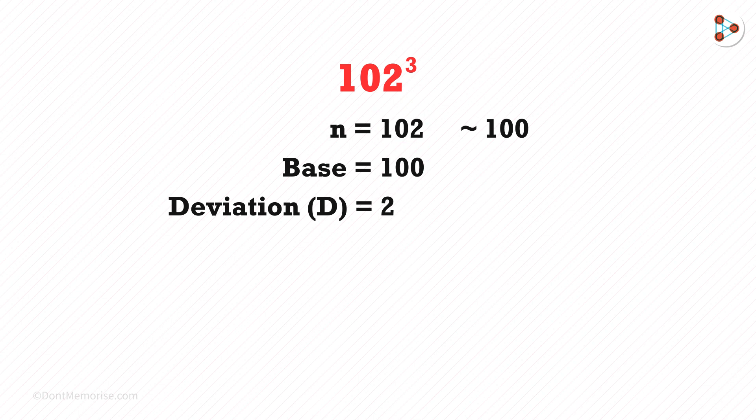Now, we have to divide this into 3 parts. On the left side, we write n plus 2D. In the middle, we write 3 times D squared. And on the right, we write D cubed.